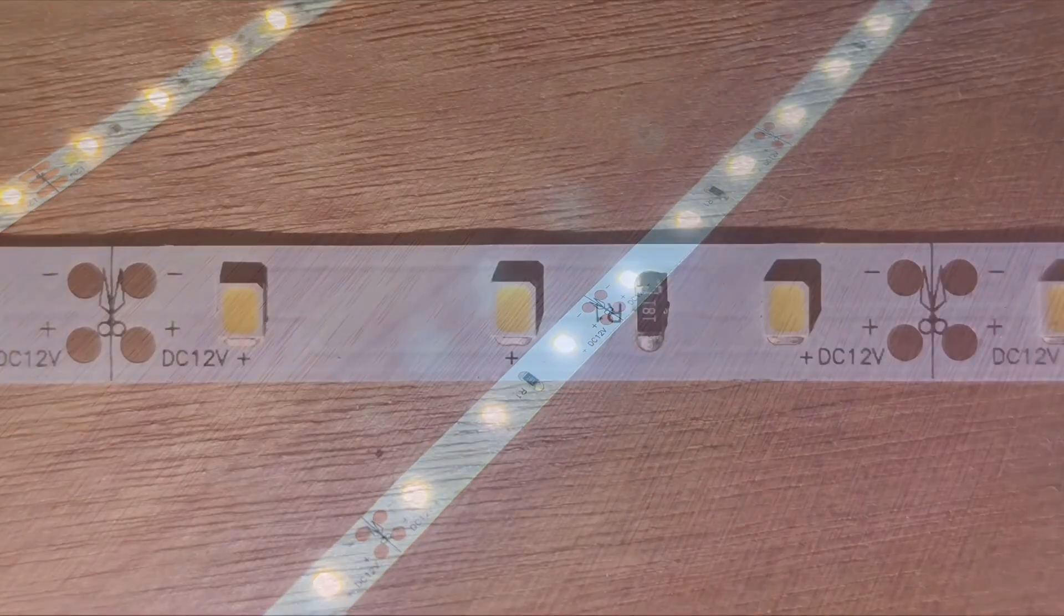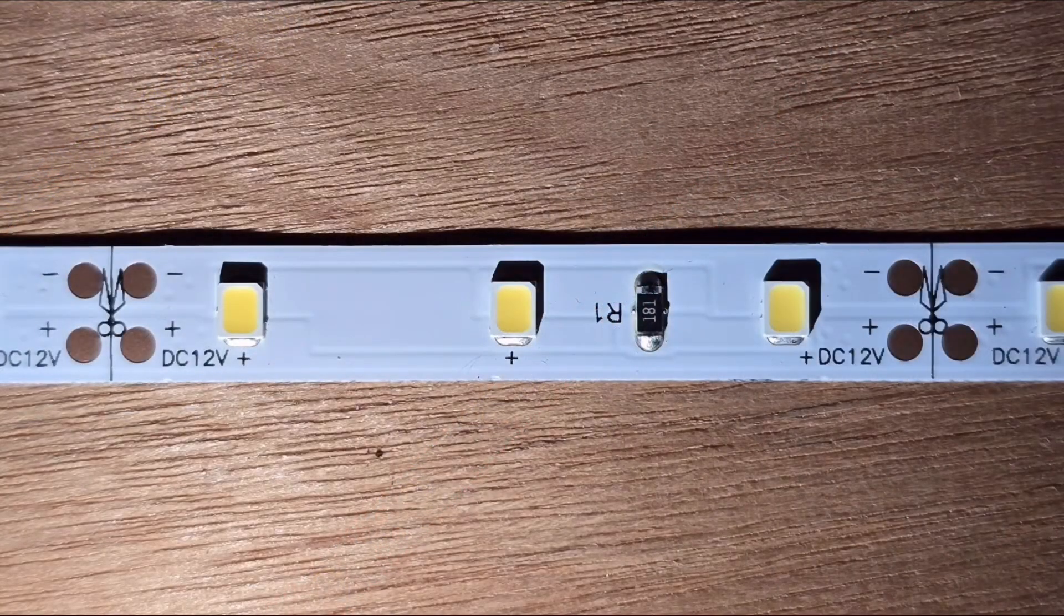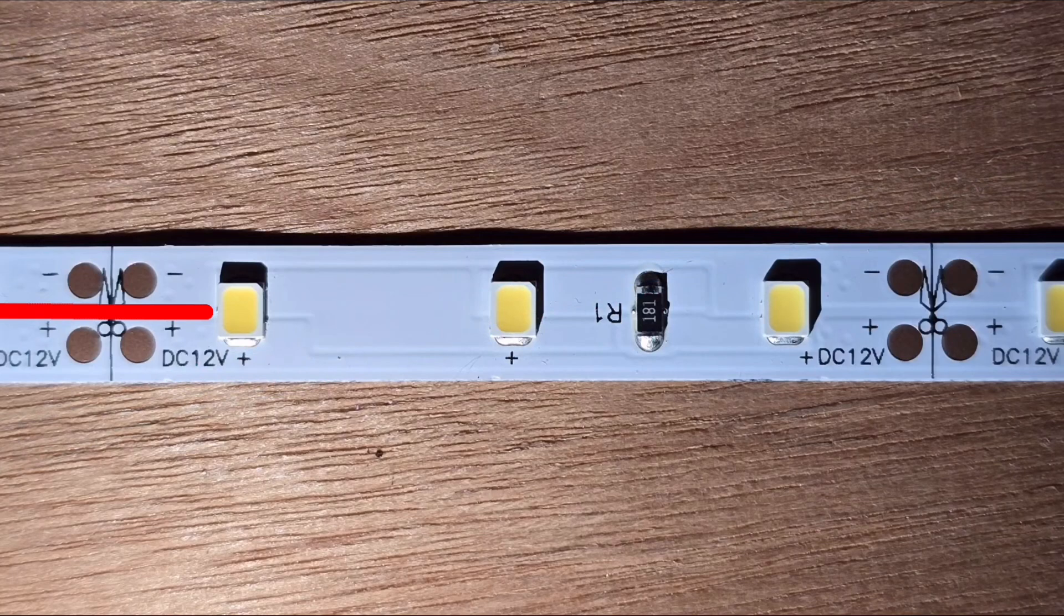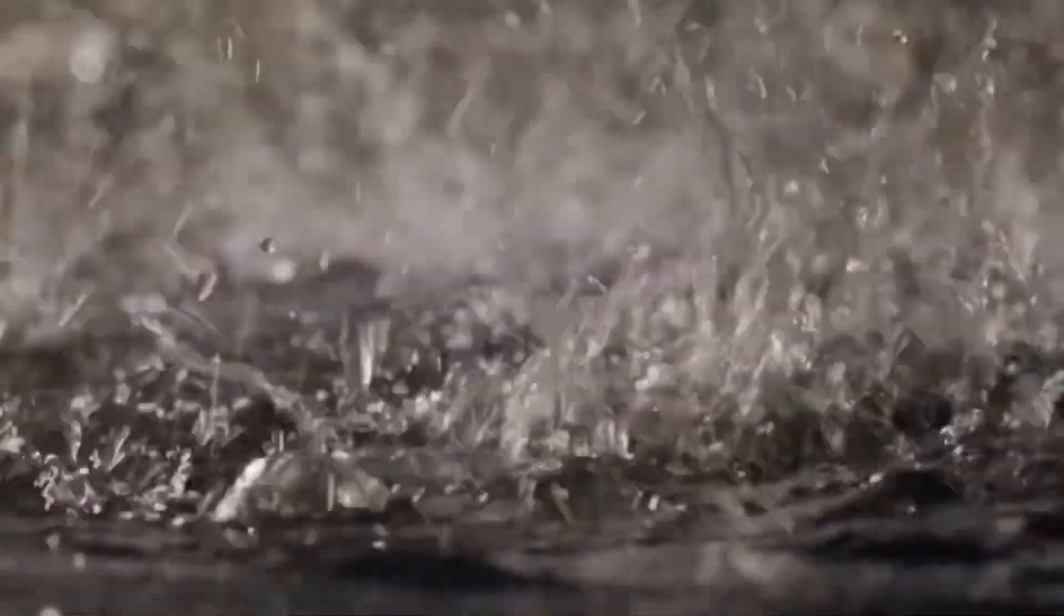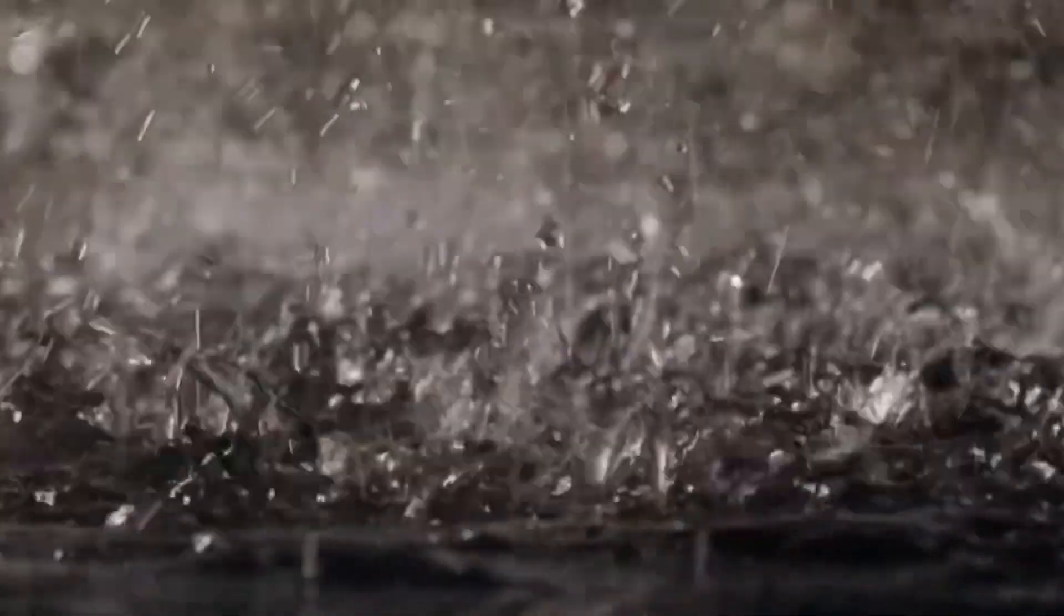Of course the other job of insulation is to stop the copper conductors from touching each other and it's doing that as there's insulation between the two conductors. And as you wouldn't use this strip in damp environments, it's completely fine to be exposed like that.